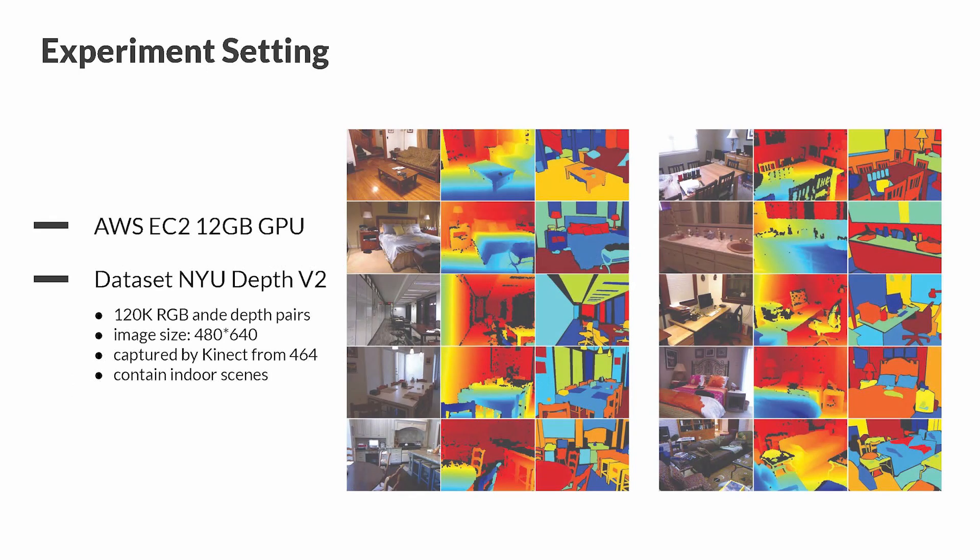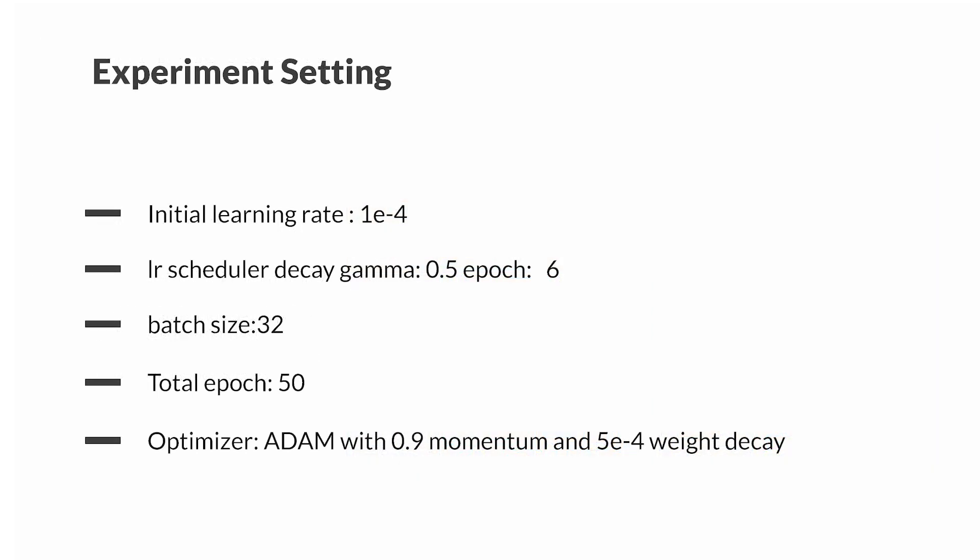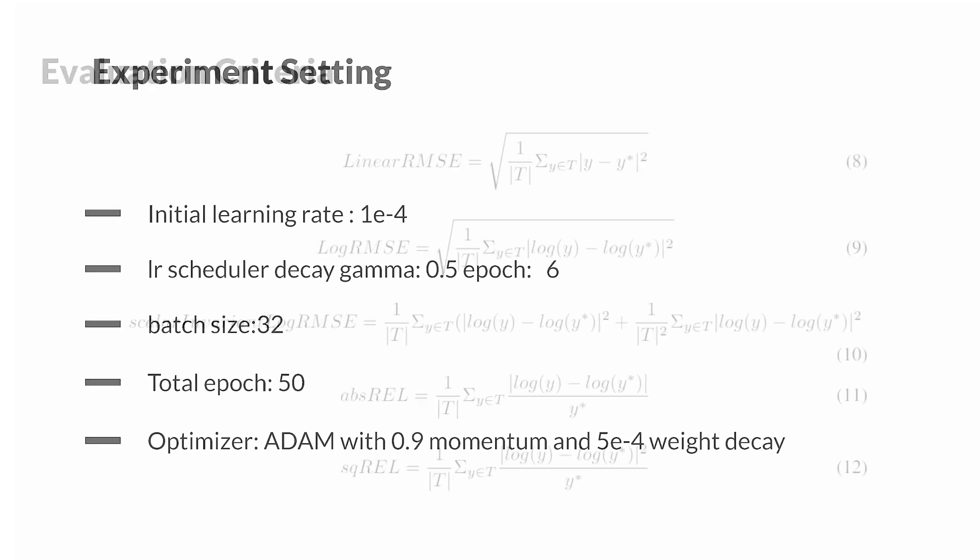Here comes our experiment on depth estimation. We ran our experiment on NYU Depth Version 2 dataset, which contains 120,000 RGB and depth image pairs. We follow the experiment setting with the paper. Our initial learning rate is 1e-4. The learning rate scheduler is set with a decay of 0.5 every 6 epochs. The batch size is set to 32 and we train it for 50 epochs. The optimizer is Adam with the default settings.